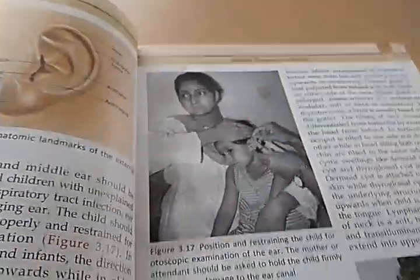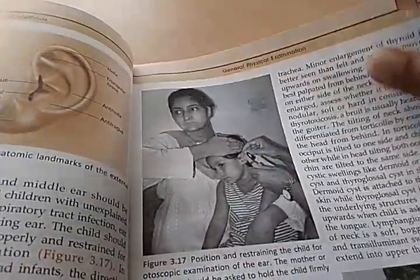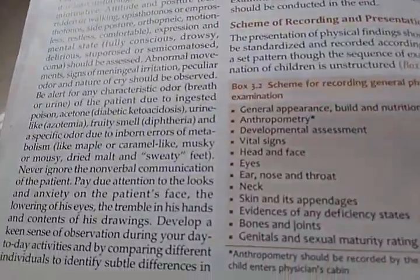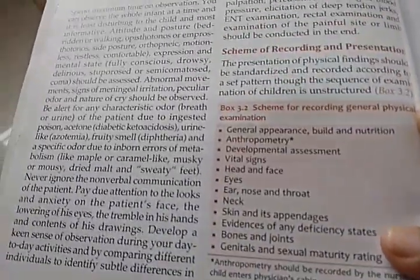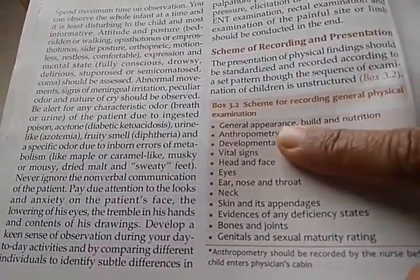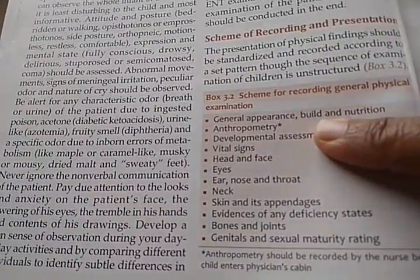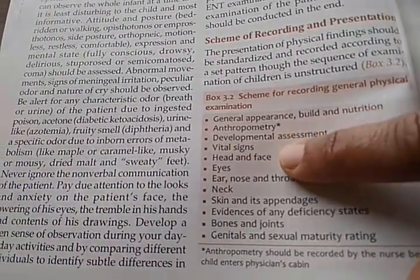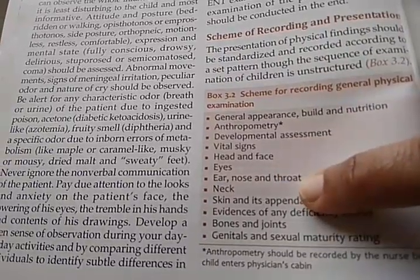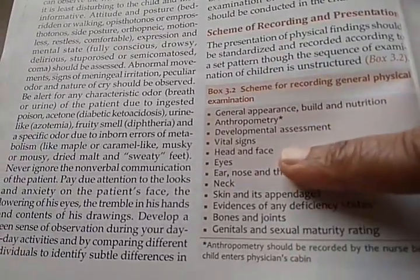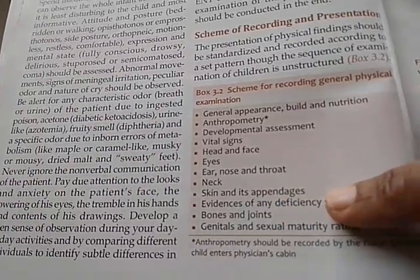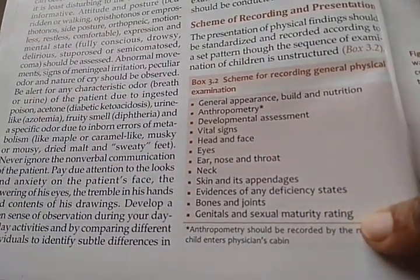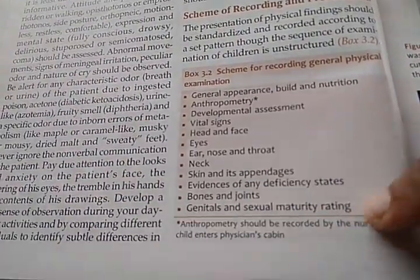In general physical examination they also examine the ear, nose, and throat. The general physical examination proceeds head-to-toe: general appearance, build, nutrition, anthropometry, developmental assessment, vital signs, head and face, eyes, ears, nose, throat, neck, skin, deficiency status, bones, joints, and genitalia with sexual maturity rating.